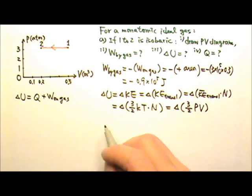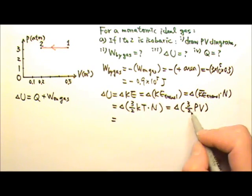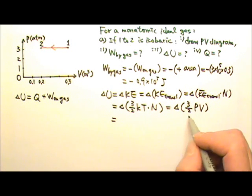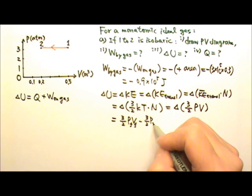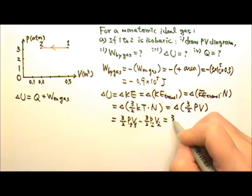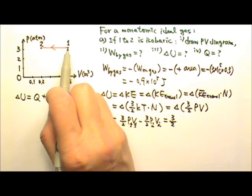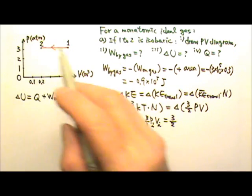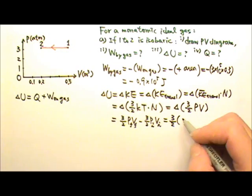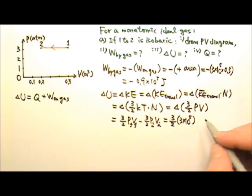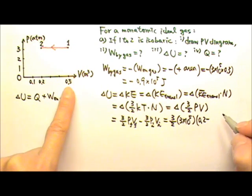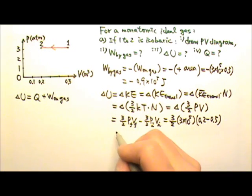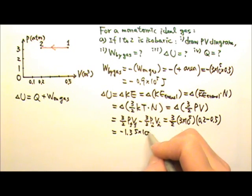That follows from the ideal gas law. So to find ΔU, we compute the final 3/2 PV minus the initial 3/2 PV. We can factor out 3/2 and the pressure, which is 3×10⁵ pascals, times (V_final − V_initial). V_final is 0.2 m³ and V_initial is 0.5 m³. This gives ΔU = −1.35×10⁵ joules.